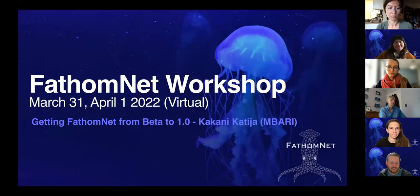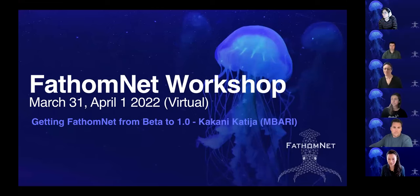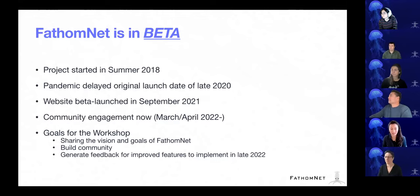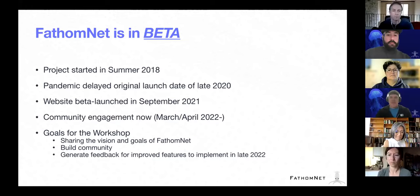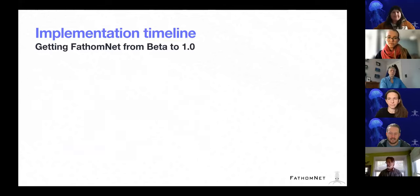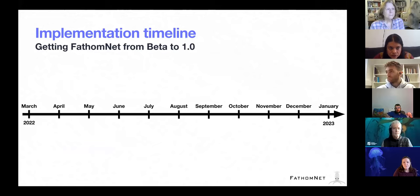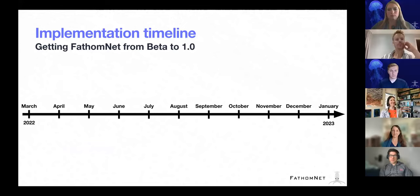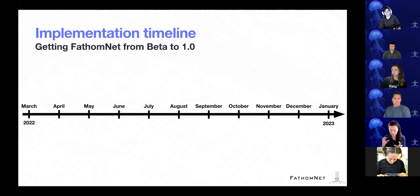I'm going to try and go quickly through this. We've repeated this a number of times, but again it's beta — not even at version one — and so what I want to talk about is what we're hoping to do in order to get there. We're really excited to be getting feedback from you all; the first hour of discussions have been really interesting. Getting FathomNet from beta to 1.0: our goal is to try to do the 1.0 launch before the end of the year.